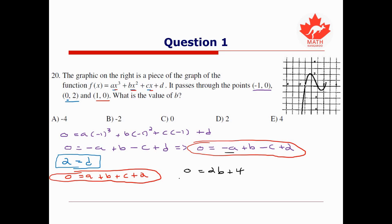So we get 0 = 2b + 4. In other words, -4 = 2b, which means b = -2. Thus our answer for this question is B: -2.